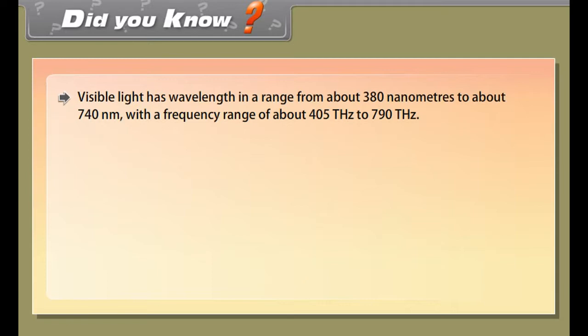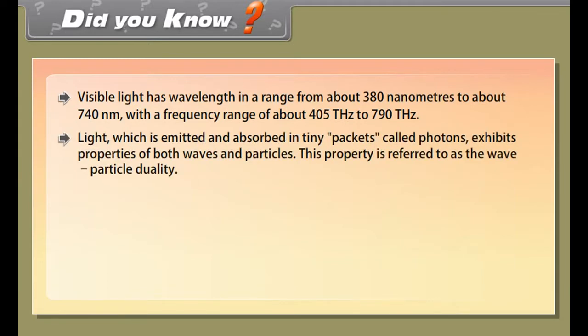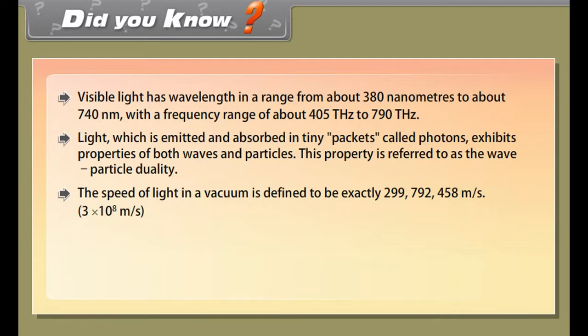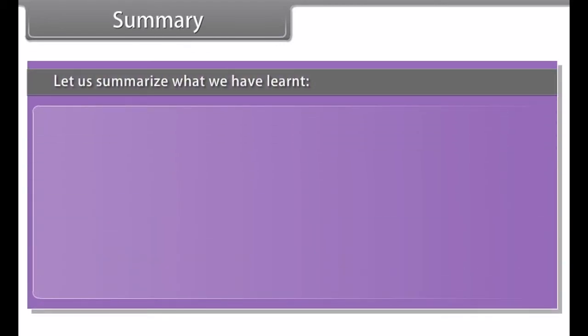Difference between objects and images: Object - anything which gives out light rays is called an object. Image - an optical appearance produced when light rays coming from an object are reflected from a mirror. Difference between real and virtual images: Real images - the images that can be obtained on a screen are called real images. Example: images formed on a cinema screen. It is formed by a concave mirror. Virtual images - the images that cannot be obtained on a screen are called virtual images. Example: image of our face in a plane mirror. It is formed by a convex lens.